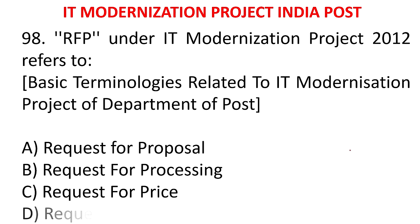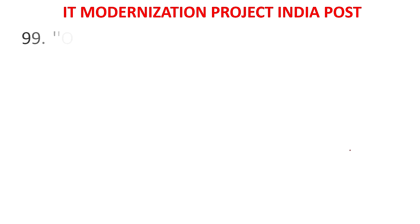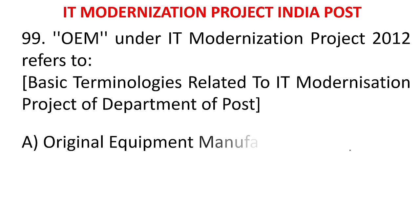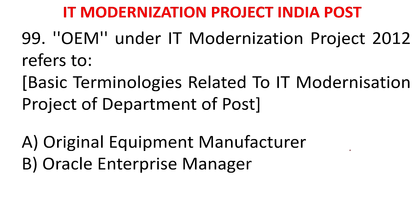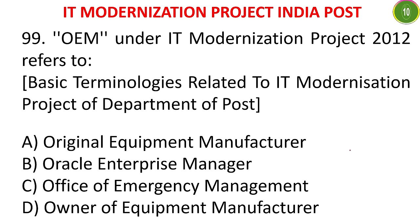MCQ 94: RFP under IT modernization project 2012 refers to - A) Request for Proposal, B) Request for Processing, C) Request for Price, D) Request for Payment. The answer is Request for Proposal.